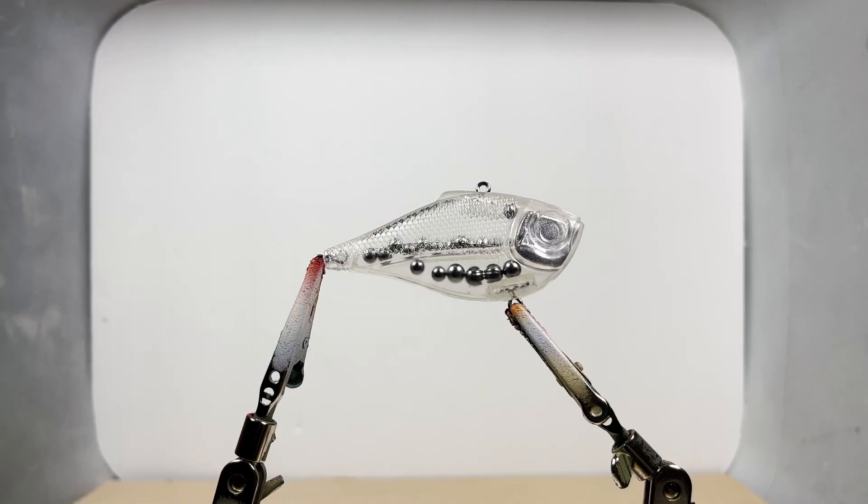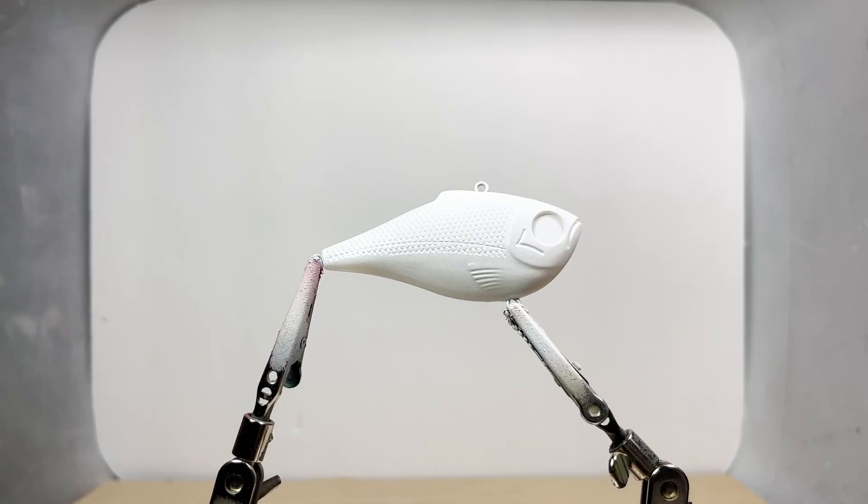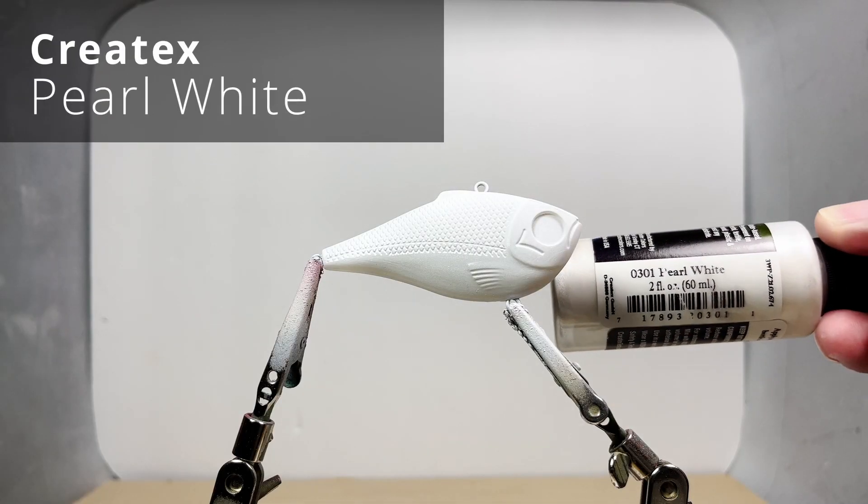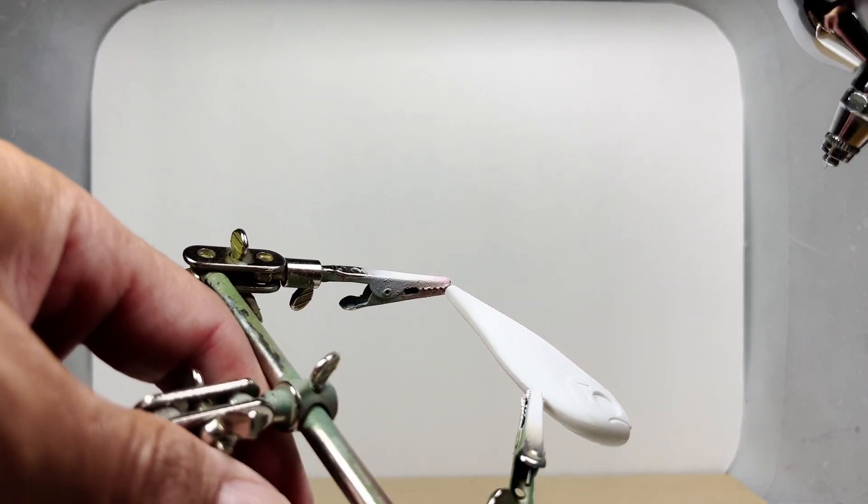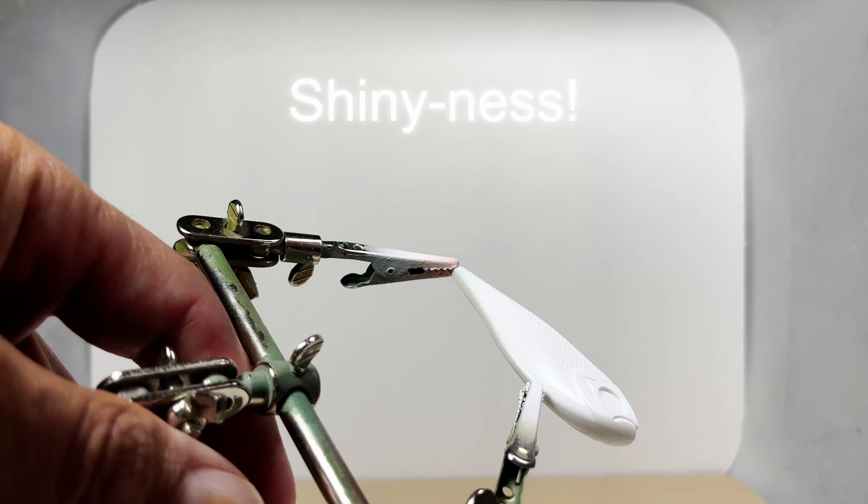We'll start this lure off with a base coat of opaque white. Then we'll go over it again with pearl white. You won't be able to tell in the video, but it'll add a kind of shininess to the lure.